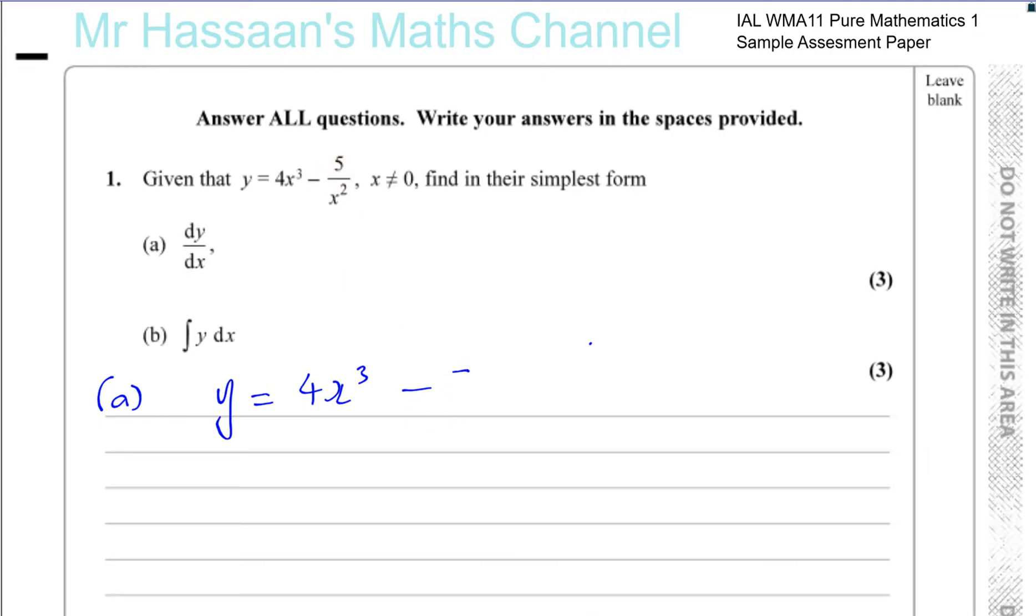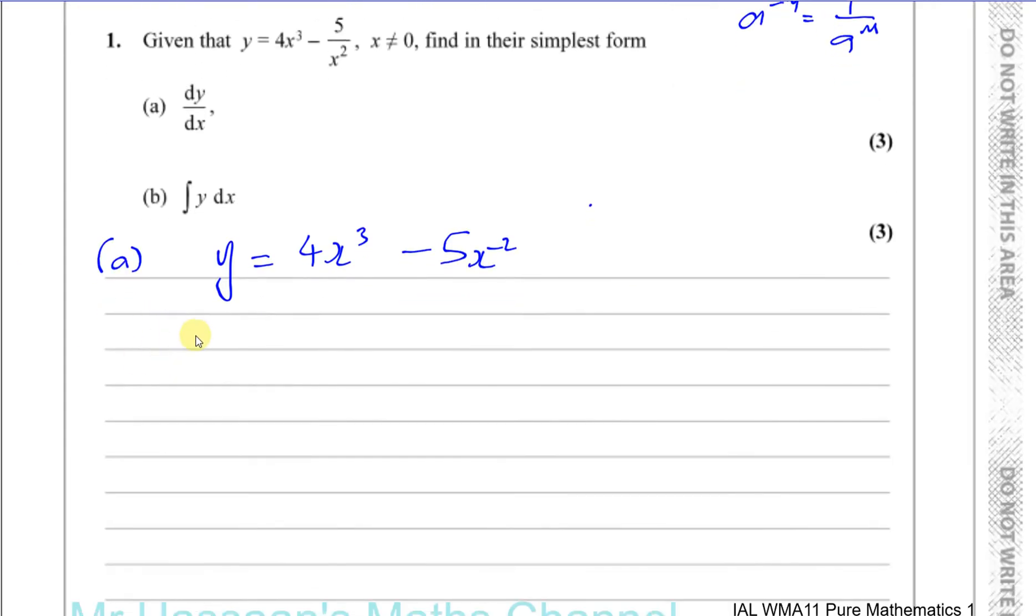So this 5 over x squared should be expressed with x on the numerator. So this will be 5 times x to the power of minus 2, using the fact that we have index law that a to the power of minus m is the same as 1 over a to the power of m. It's a reciprocal. The negative power just makes it reciprocal. So 1 over x squared is the same as x to the power of minus 2. So this becomes minus 5 times x to the power of minus 2, and then we can differentiate.